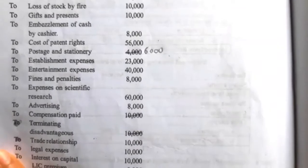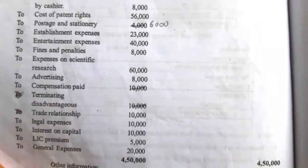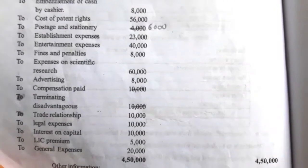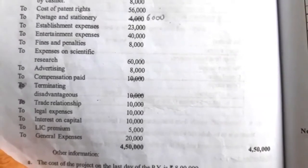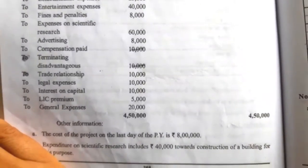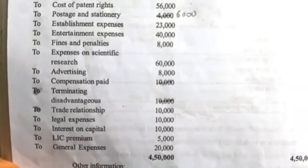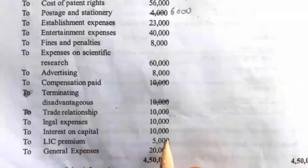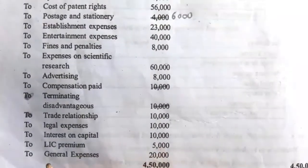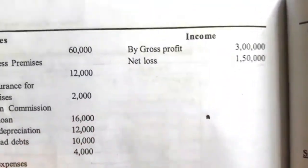Postage and stationery rupees 6,000; establishment expenses rupees 23,000; entertainment expenses rupees 40,000; fines and penalties rupees 8,000; expenses on scientific research rupees 60,000; advertisement rupees 8,000; compensation paid to terminate the disadvantageous trade relationship rupees 10,000; legal expenses 10,000; interest on capital 10,000; LC premium 5,000; general expenses 20,000.